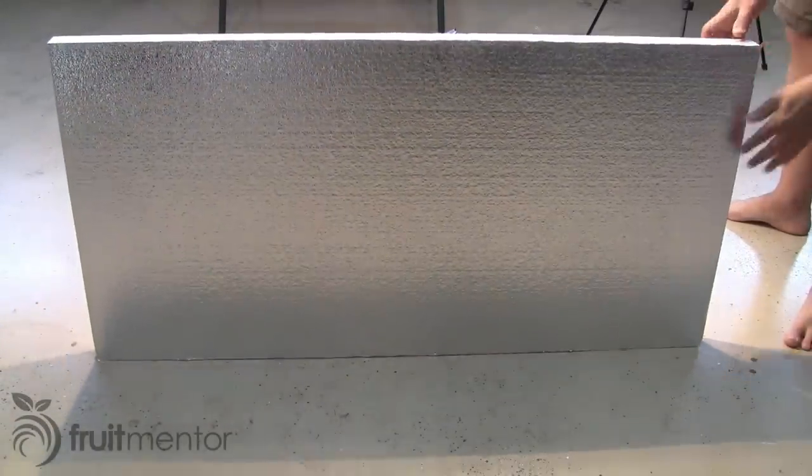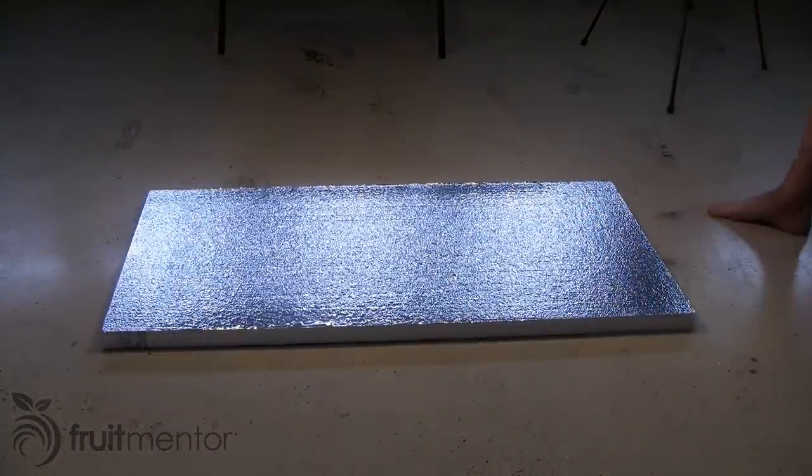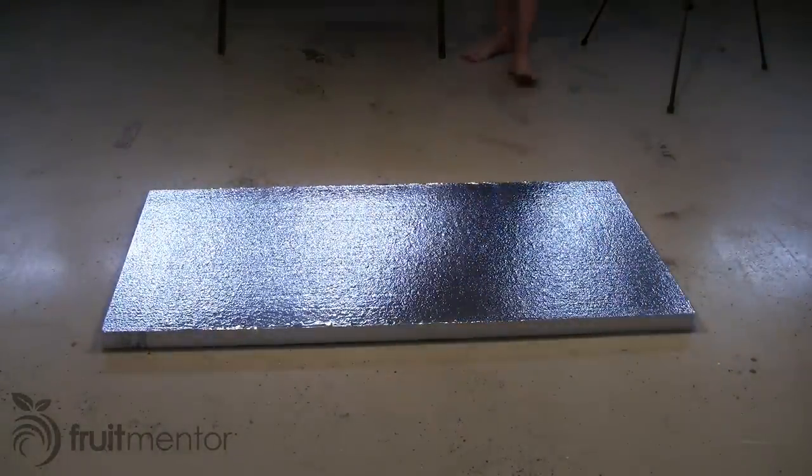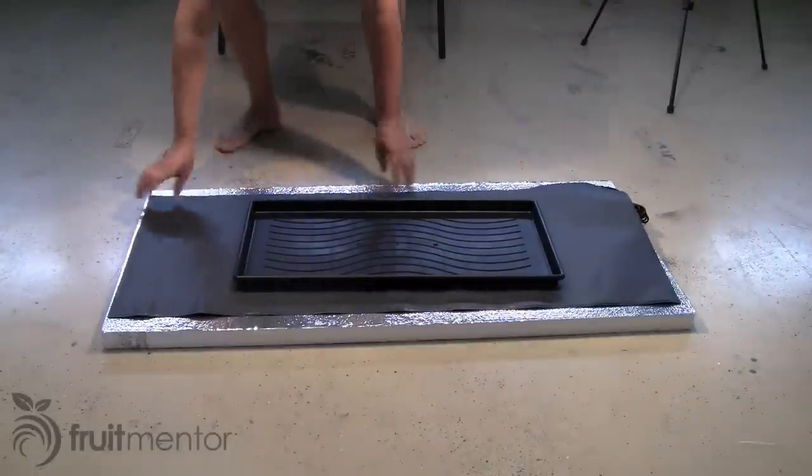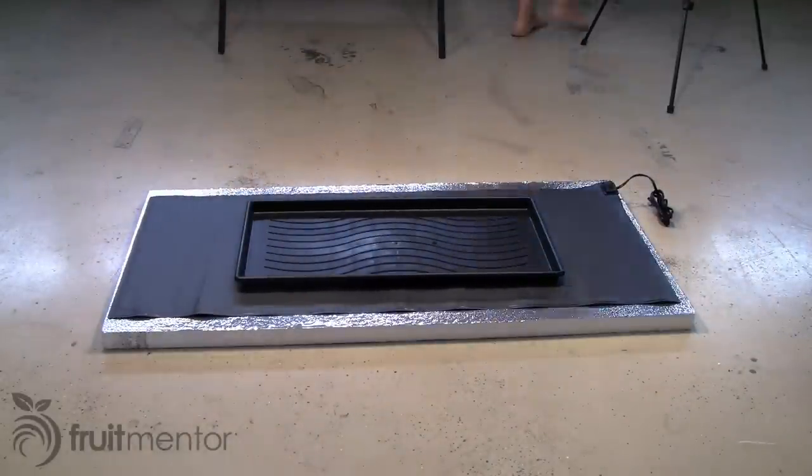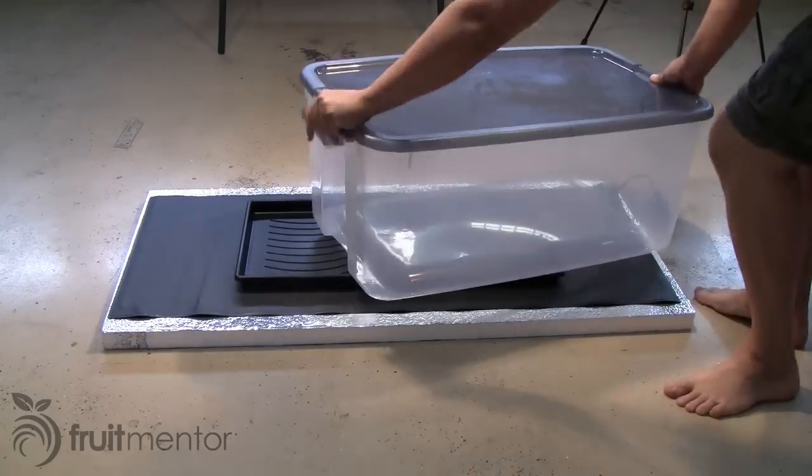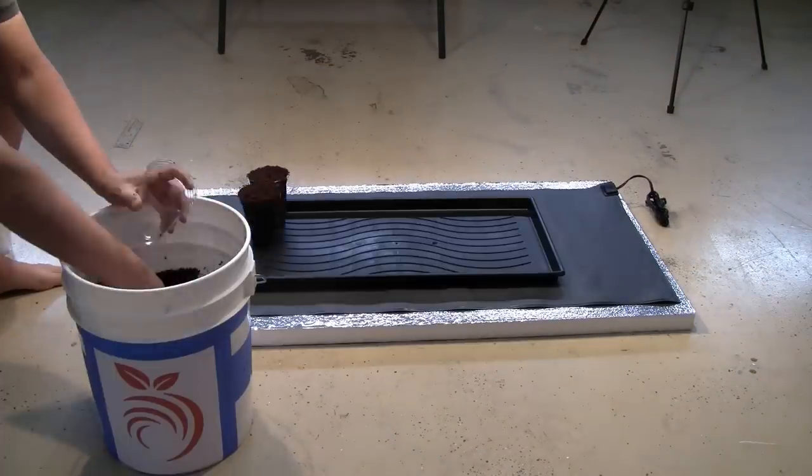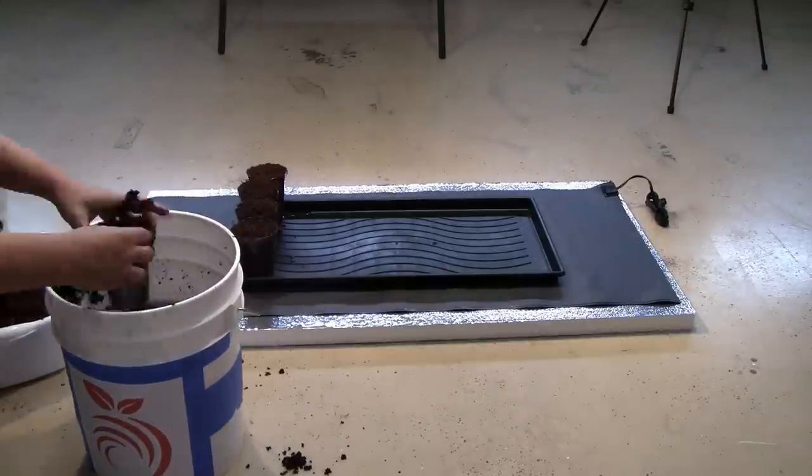To achieve the ideal temperature of 80 degrees Fahrenheit or 26.7 degrees Celsius, I put my planting tray on top of a heated mat on top of a piece of rigid insulation. To maintain high humidity, I covered my plants with a clear storage container. Next, I filled my cups with coconut coir.